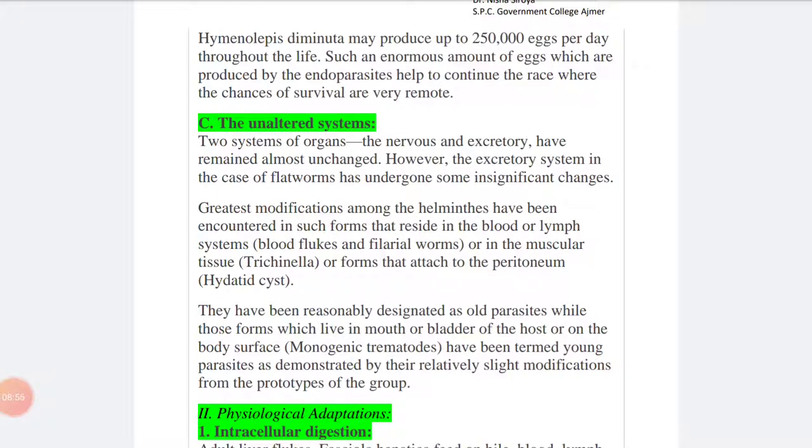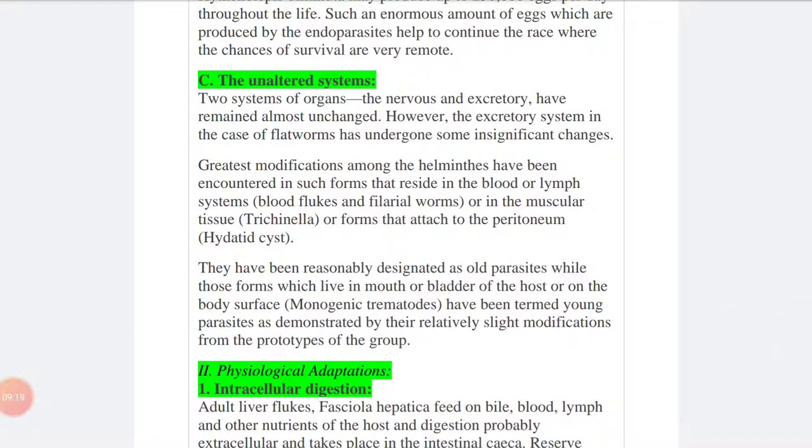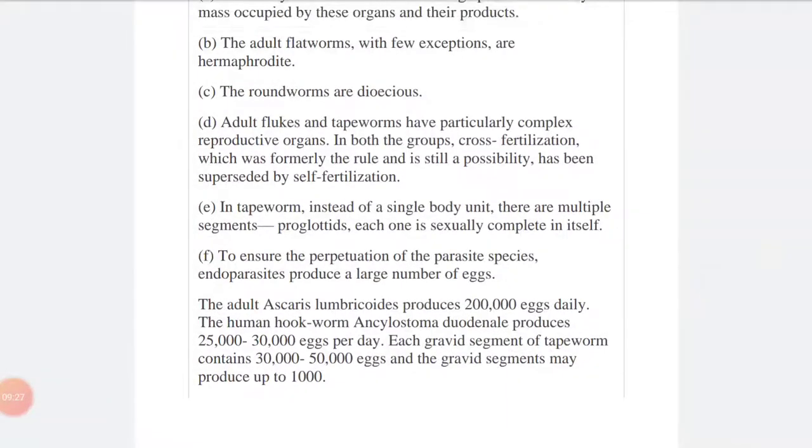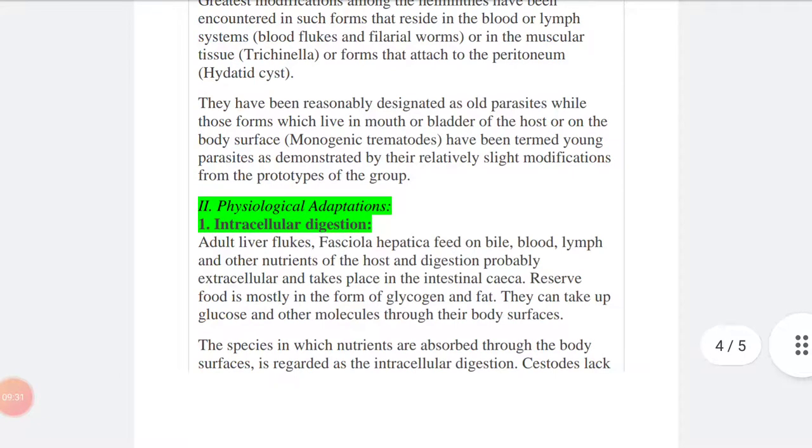The unaltered systems. Two systems of organs, the nervous and the excretory, have remained almost unchanged. However, the excretory system in the case of flatworm has undergone some significant changes. The greatest modifications among the helminths have been encountered in such forms that reside in the blood or lymph system, or in the muscular tissue, or forms that attach to the peritoneum. They have been reasonably designed as old parasites, while these forms which live in mouth or bladder of the host or on the body surface have been termed young parasites, as demonstrated by the relatively slight modification from the prototype of the groups.